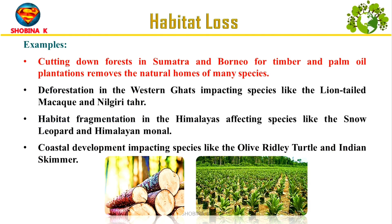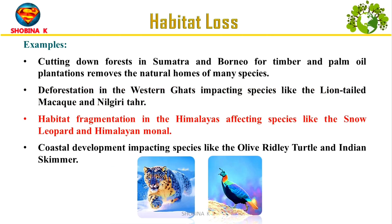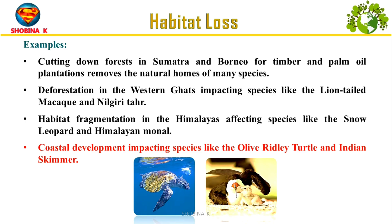Examples of habitat destruction and fragmentation impacts on specific species include: cutting down forests in Sumatra and Borneo for timber and palm oil plantations, removing habitats for orangutans, tigers and various bird species; deforestation in the Western Ghats affecting species like the long-tailed macaque and Nilgiri tahr; habitat fragmentation in the Himalayas caused by roads, buildings and settlements affecting snow leopards and Himalayan monal; and coastal development disrupting habitats for olive ridley turtles and the Indian skimmer.